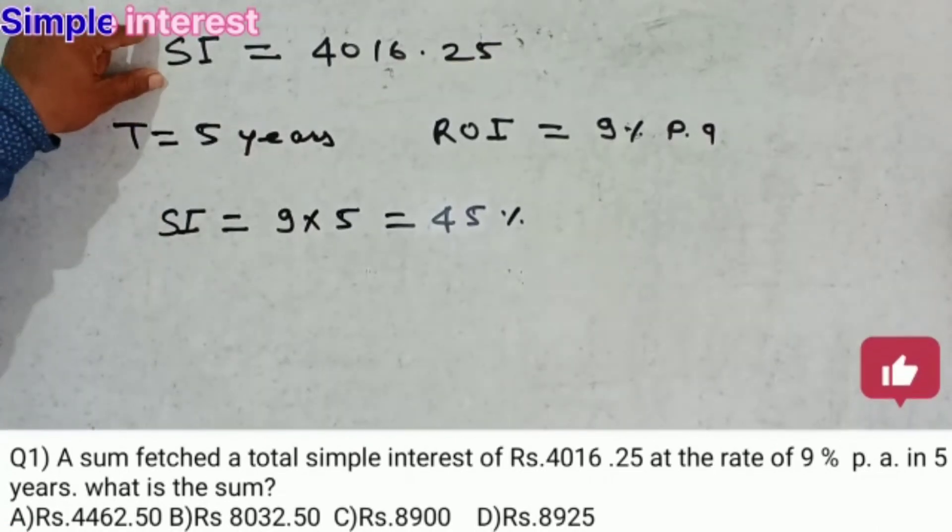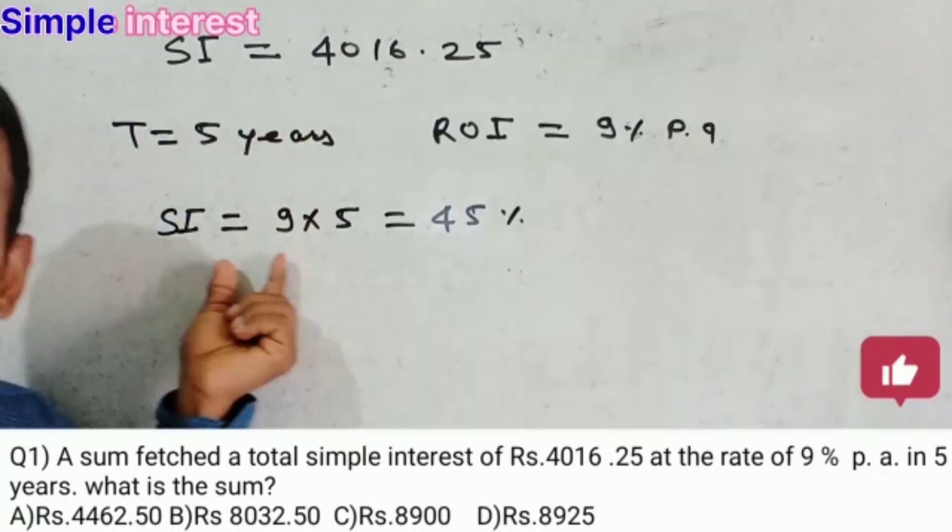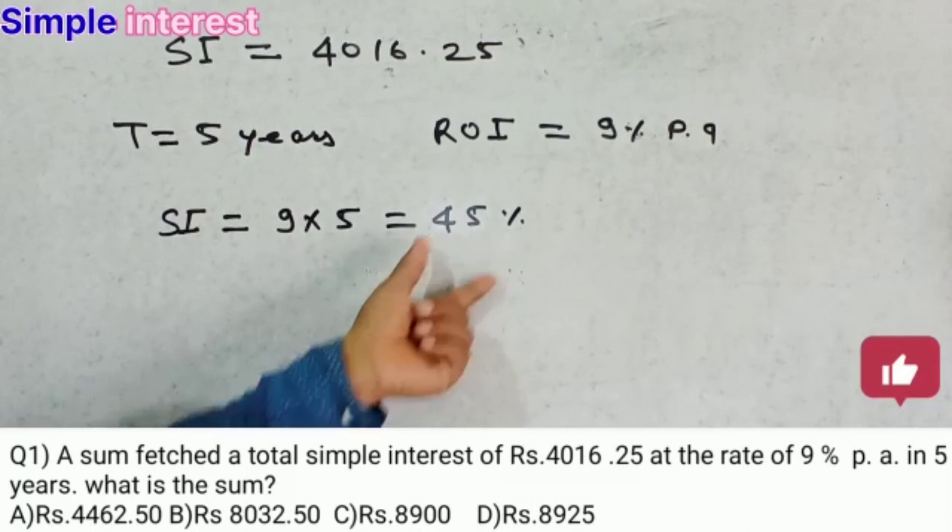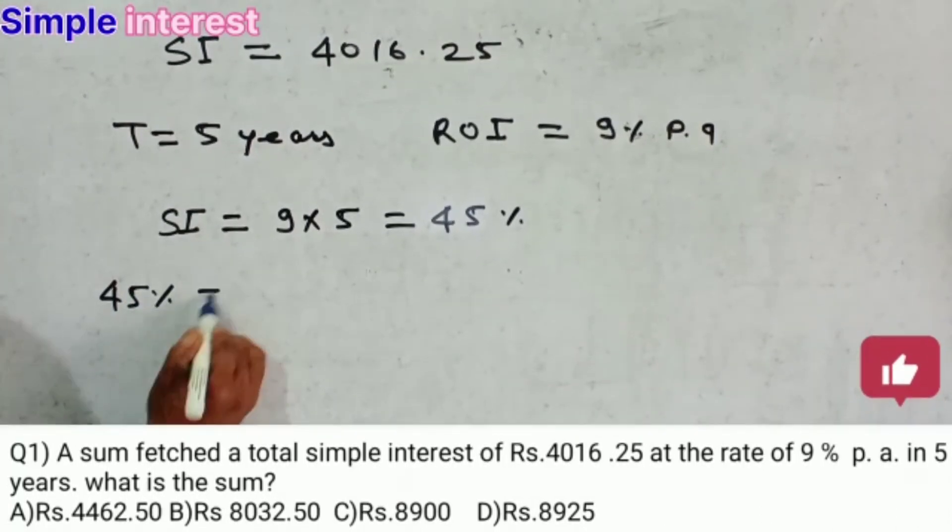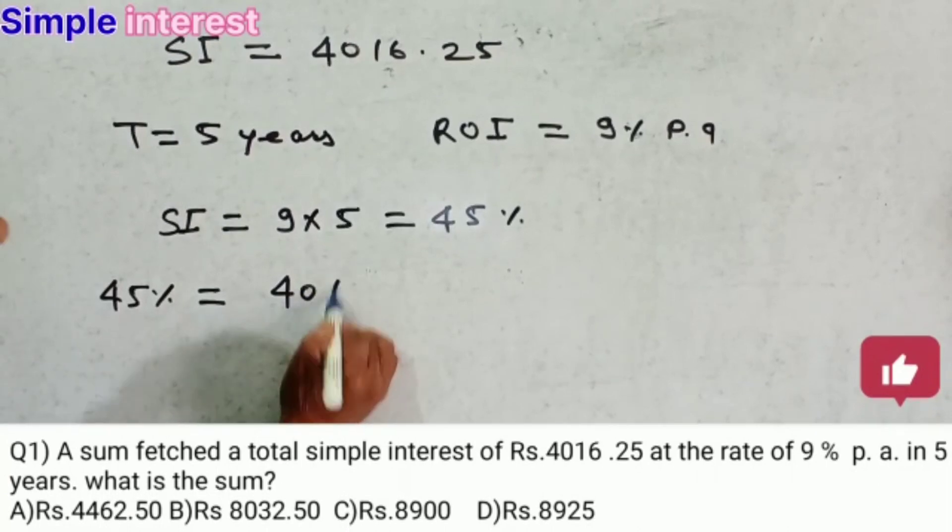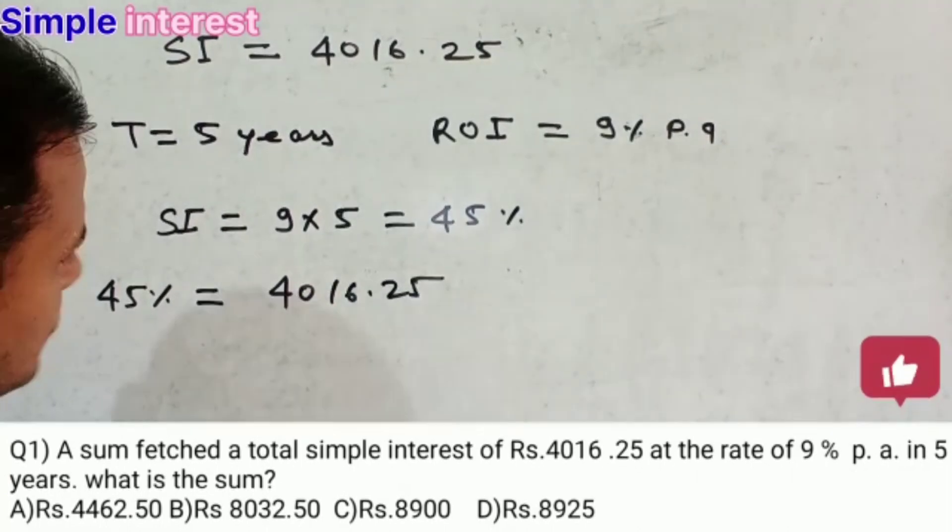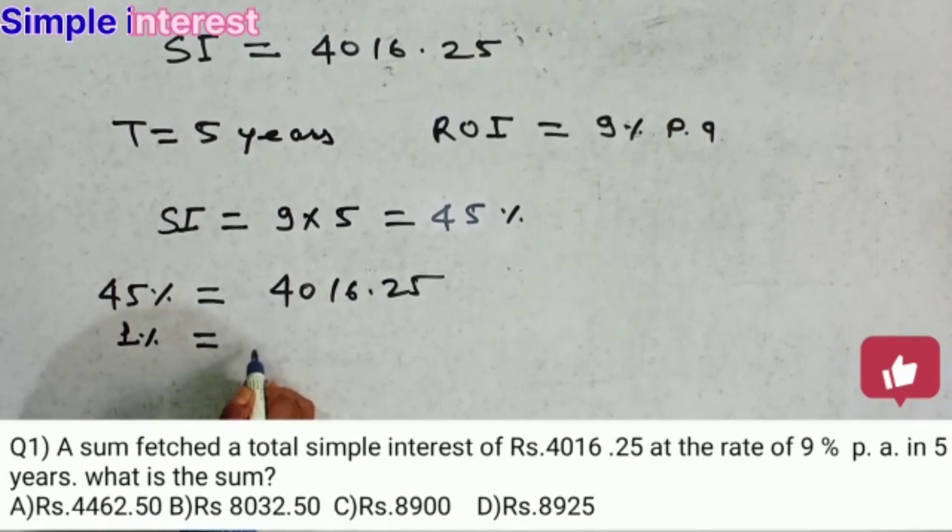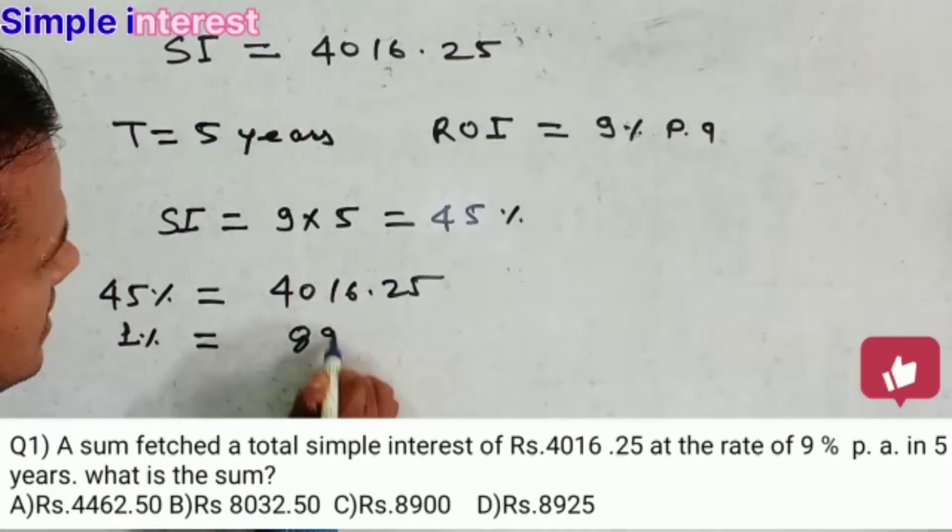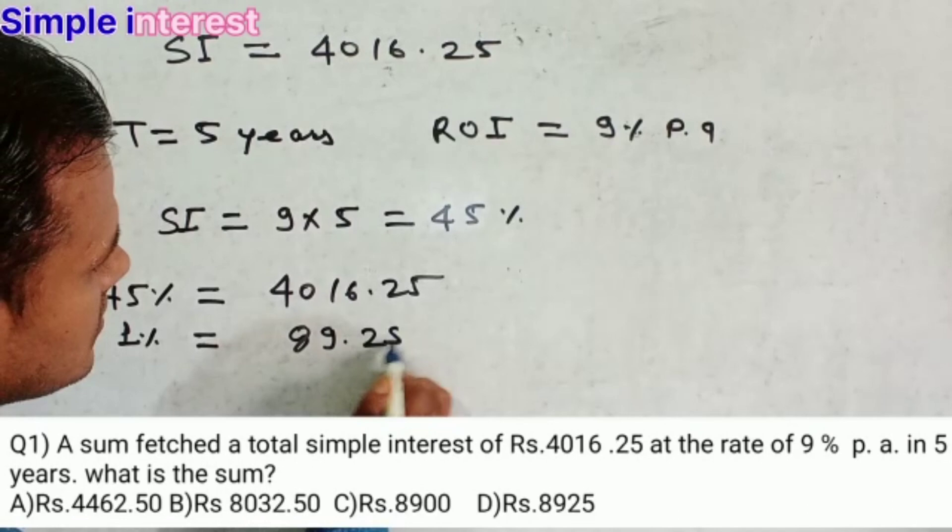This is total simple interest in rupees. But this is total simple interest in percent. So 45% is equal to 4016.25. So 1% will be 89.25.